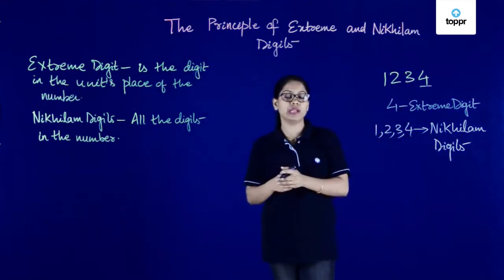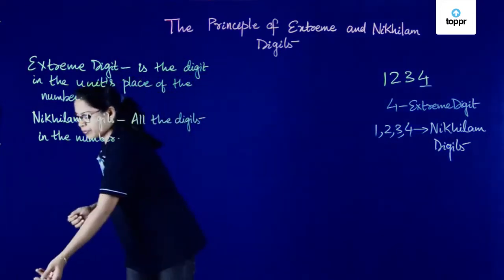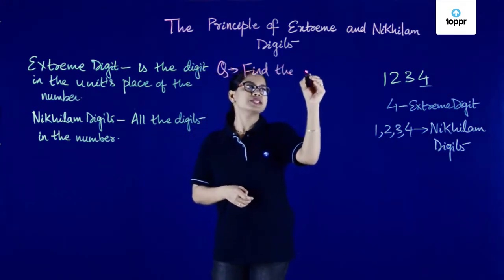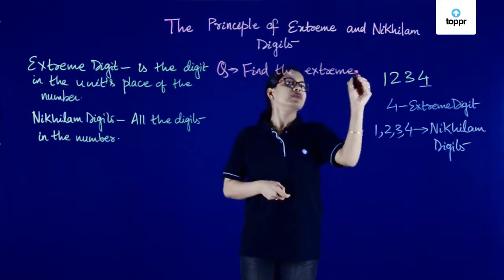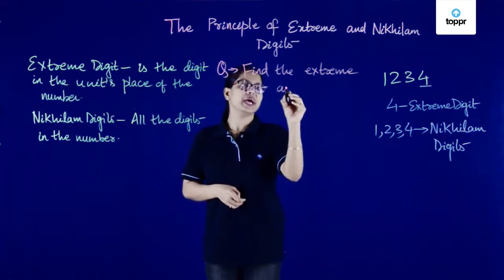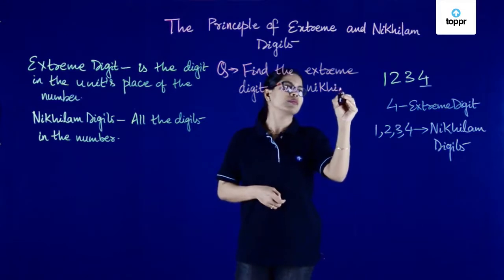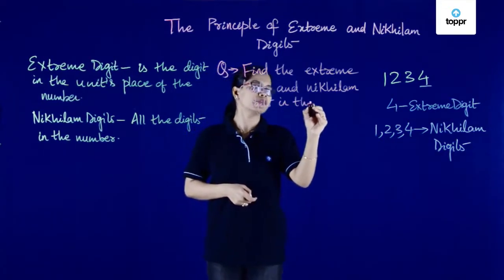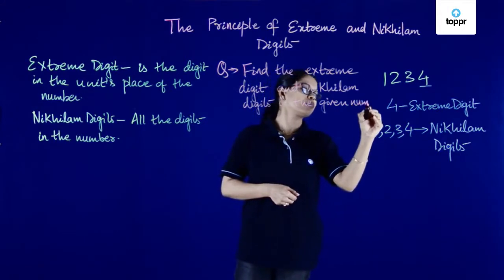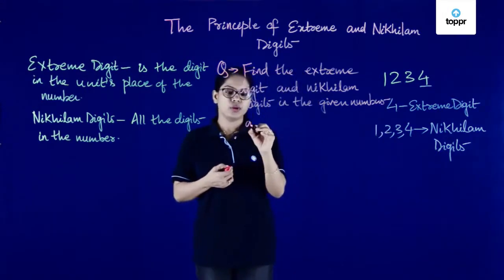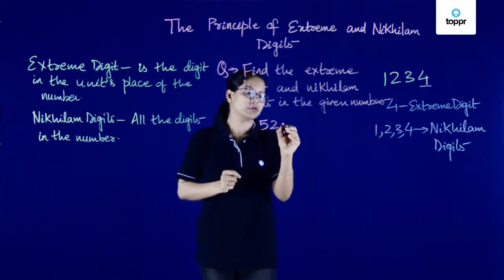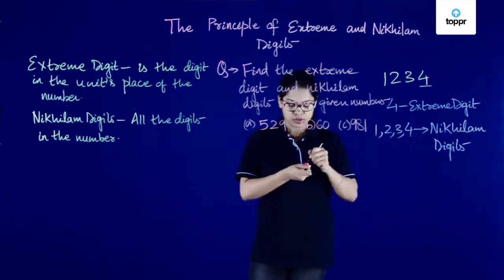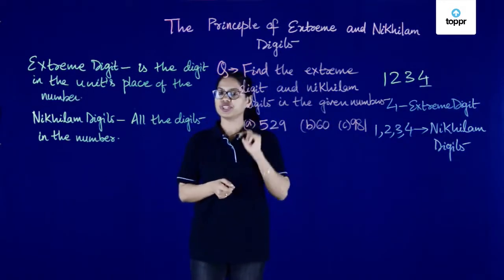Now that we know which digits are nickelam and which are extreme, we can answer a question. Find the extreme digit and nickelam digits in the given numbers. The first number is 529.